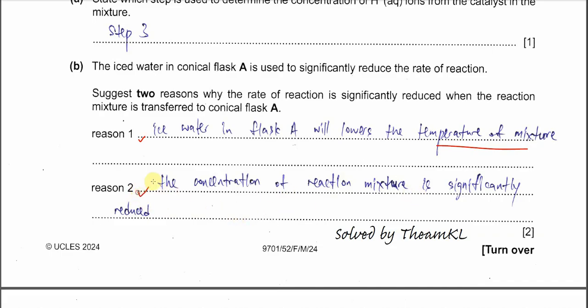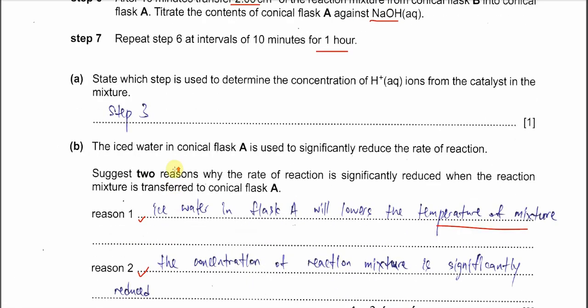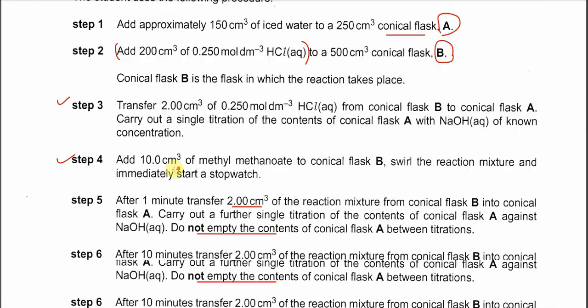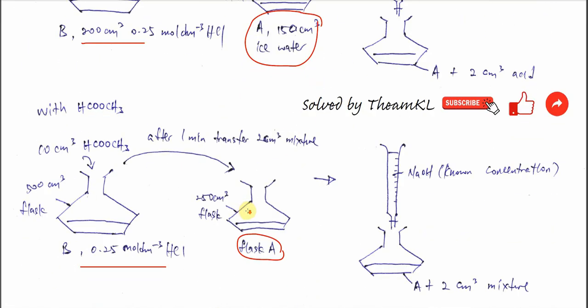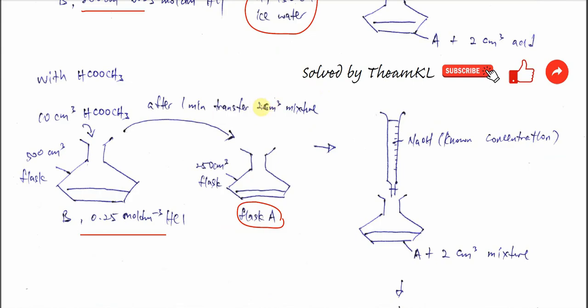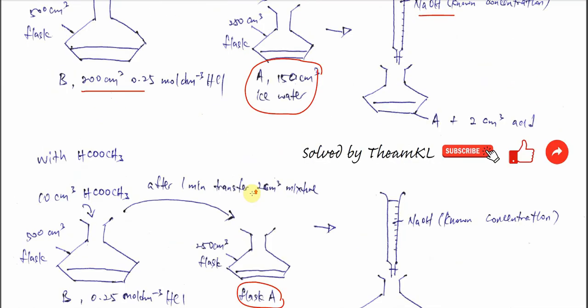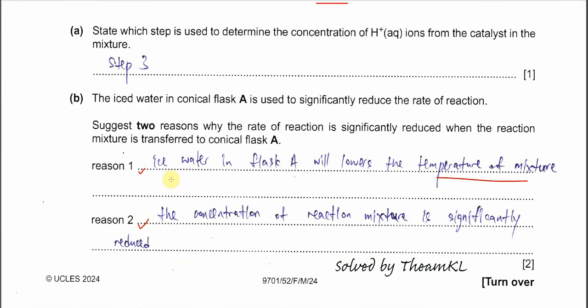Reason 2: the concentration of the reaction mixture is significantly reduced. This is another very important point. In conical flask A we have 150 cm³ of ice water, and we only put 2 cm³ of the reaction mixture into it, so the concentration is reduced considerably and the rate of reaction is slower as well. Just state these two reasons about temperature and concentration — do not discuss kinetic theory.